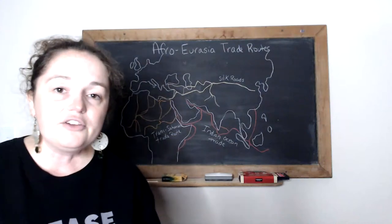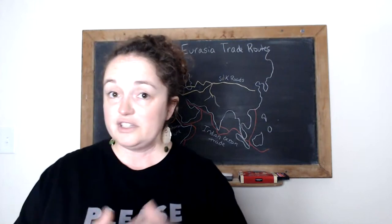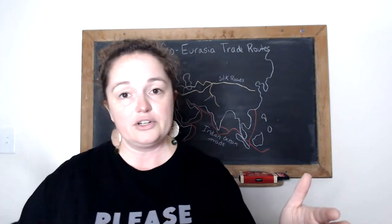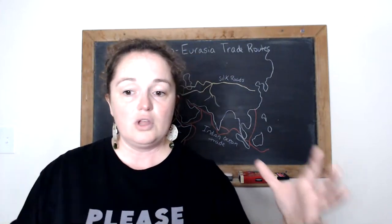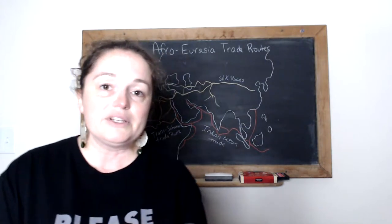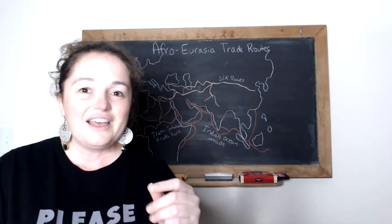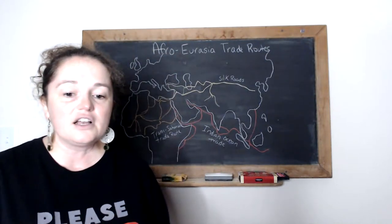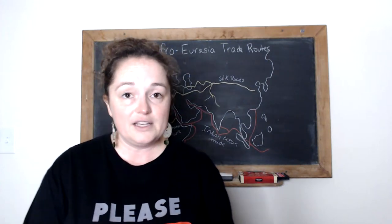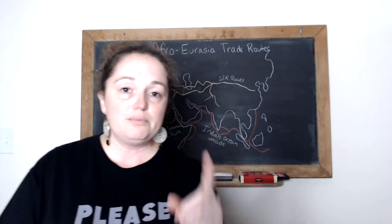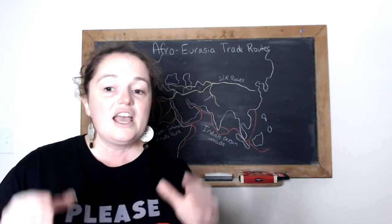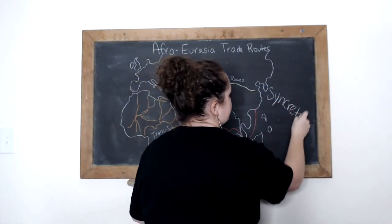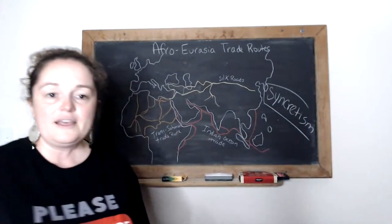Mostly luxury items are sold on the Silk Road — remember luxury items are a status symbol, kind of like bling. There are a couple of effects that are really important — you could use these for SAQs. One effect is the spread of Buddhism. When you studied this in the library, you should remember the word syncretism.